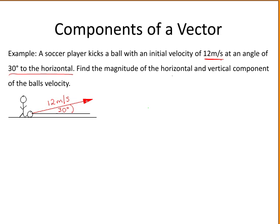We want to resolve this velocity vector into its horizontal and vertical components, as we are trying to find the magnitude of the horizontal and vertical components of the ball's velocity. We put in the horizontal component here, and the vertical component here. This is the vertical component of the ball's velocity, and this is the horizontal component.